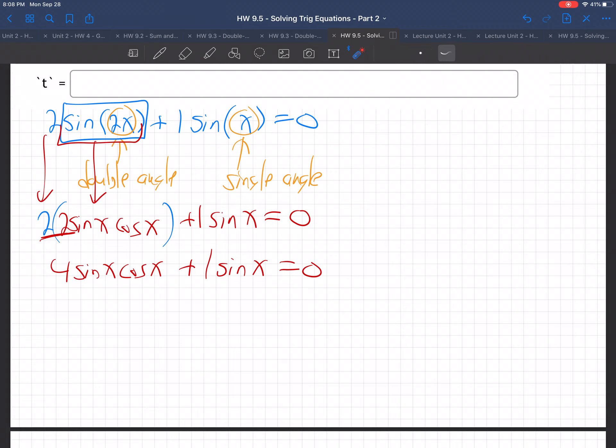Now that we get rid of the double angle, now we have that. Do you see how these guys both have what in common? They both have a sine x, don't they? So when you have a common piece, what it's saying is you factor out that common piece. And then that leaves 4 cosine plus 1 equals 0. Do you see that? If I was to multiply that there and multiply that there, 4 times cosine x would go back to 4 sine, cosine, and sine times 1 would go back to 1 sine.